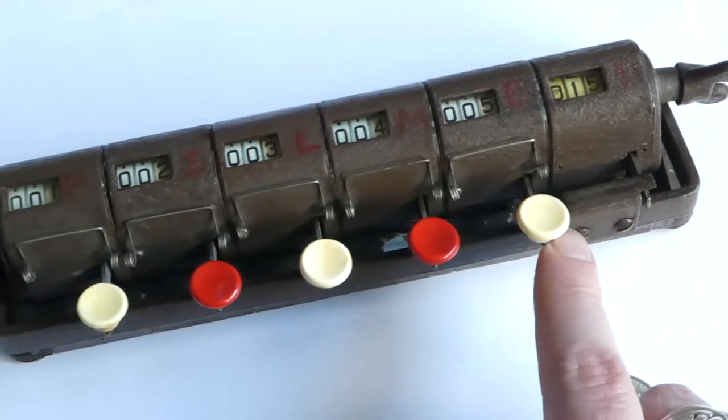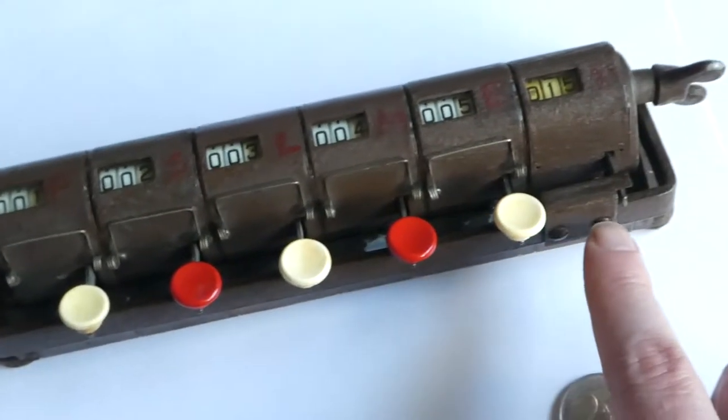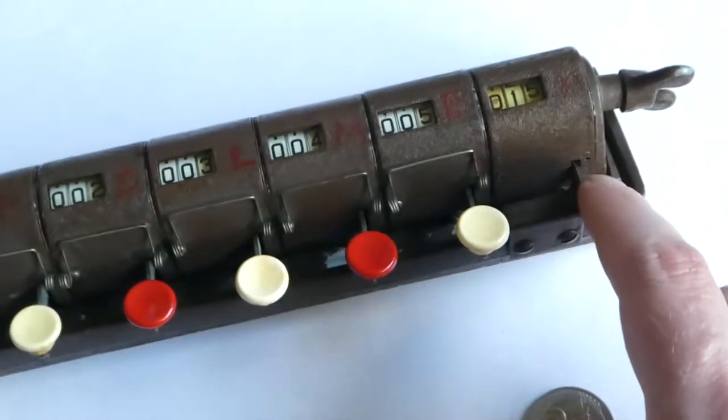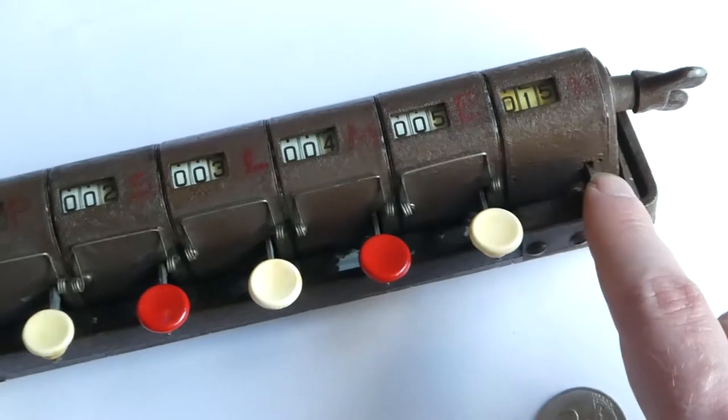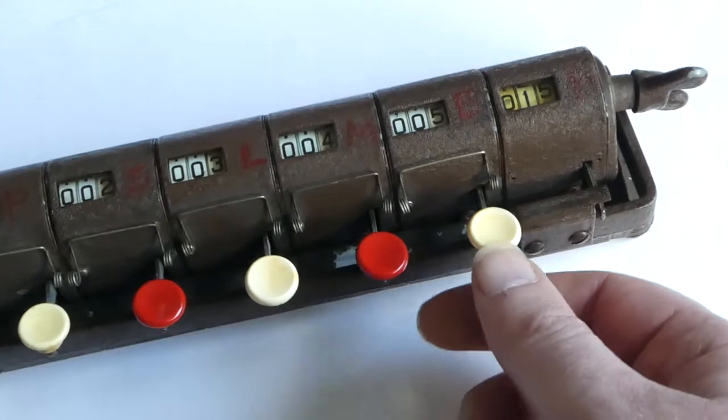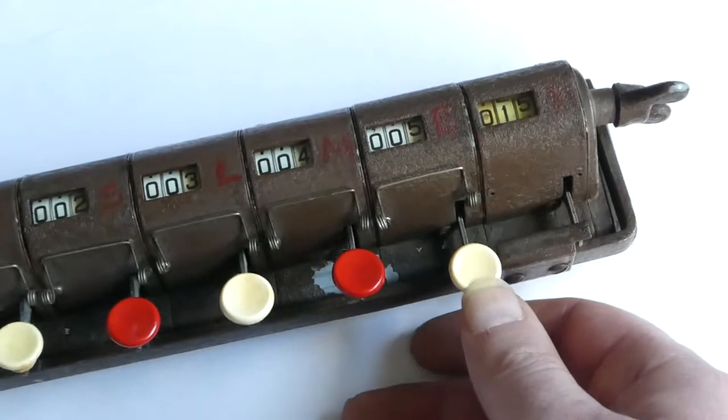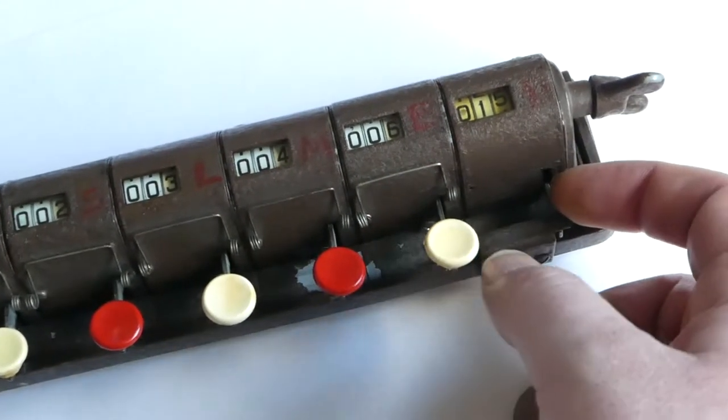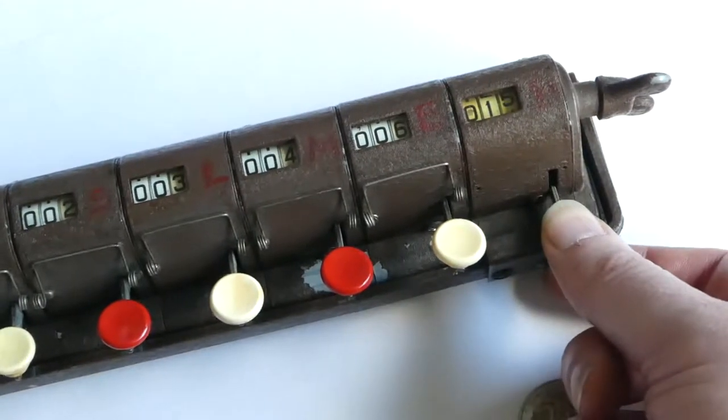Each time you press a button, the button presses down on this bar here, which is connected to this rod where normally a button would be for this counter. So as you press it down, it presses down on the total button as well.